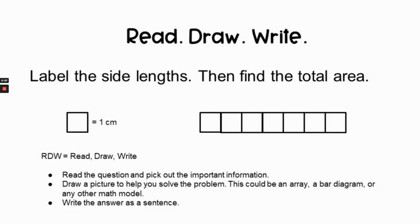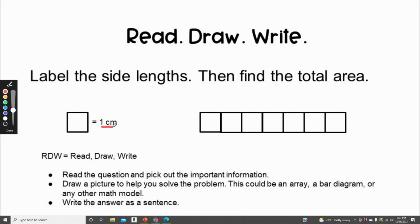It's time for your redraw-write question. We're going to read the question together, then you will draw a picture to help solve the problem and write the answer as a sentence. Label the side lengths, then find the total area. Each square is one centimeter. Pause the video, do your work, and I'll see you in the next video.